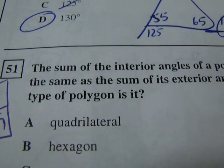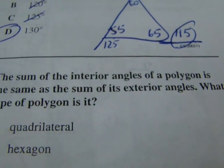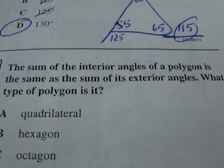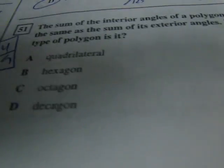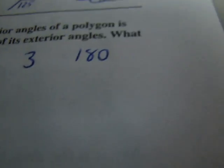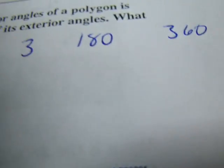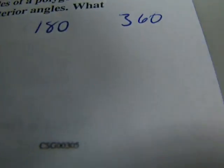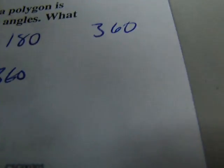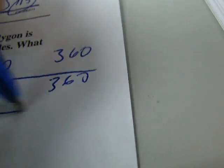Number 51. The sum of the interior angles of a polygon is the same as the sum of the exterior angles. What type of polygon is it? Okay, so good way to think of this. Well we know that triangles are 180 interior. We also know that exteriors are always 360. We know that quadrilaterals are 360. And like we said, exteriors are always 360. So it looks like quadrilateral is going to be our answer.